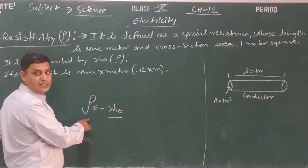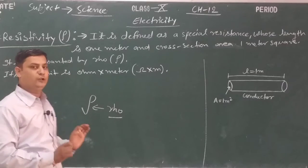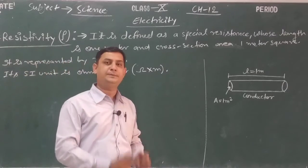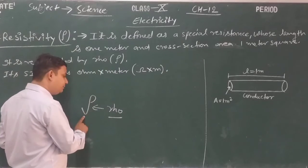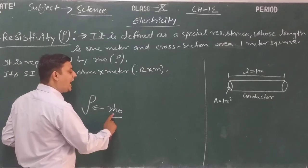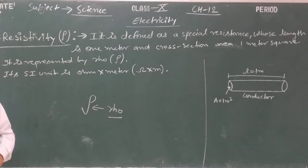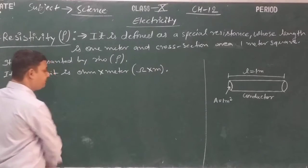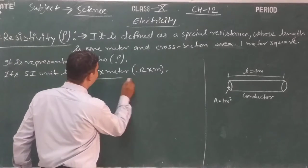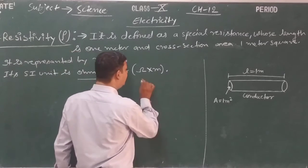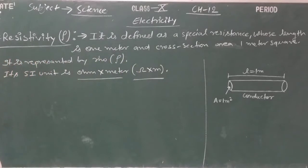In this topic, resistivity is represented by the symbol rho. Rho is the symbolic notation of resistivity. The SI unit of resistivity is ohm into meter, which in shortcut we can write as ohm·m.